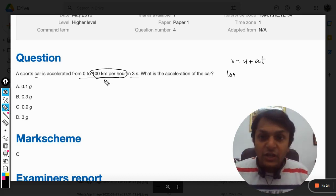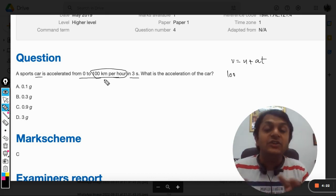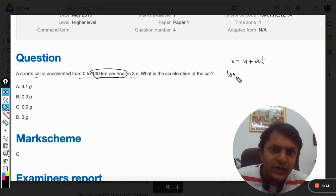Kilometers per hour are not the SI unit for the speed or velocity, it is meters per second. So we have to convert it. This is kilometer per second, so 3600.